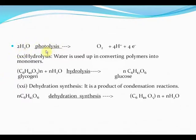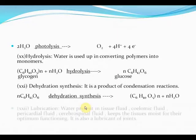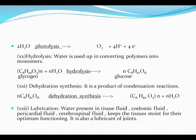Water undergoes photolysis to give oxygen, hydrogen ions, and four electrons. Water is also used in converting polymers into monomers — for example, glycogen on hydrolysis with water gives glucose — and in dehydration synthesis, water is used. Lubrication also requires water. The tissue fluids, coelomic fluid, pericardial fluid, and cerebrospinal fluid keep the tissues moist for their optimum functioning and also act as lubricants for joints.